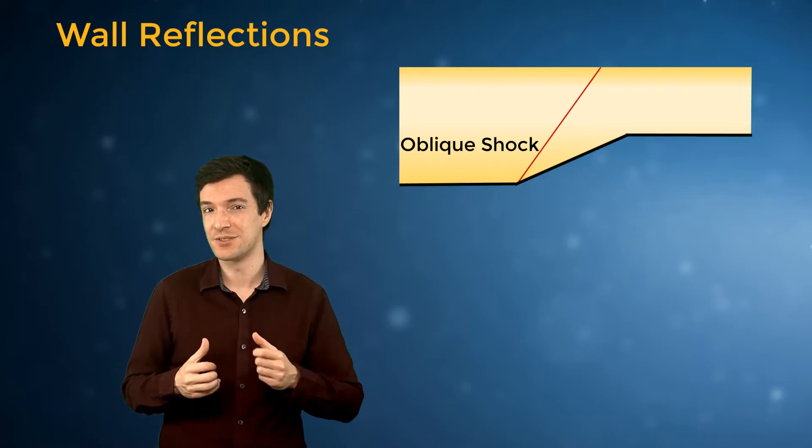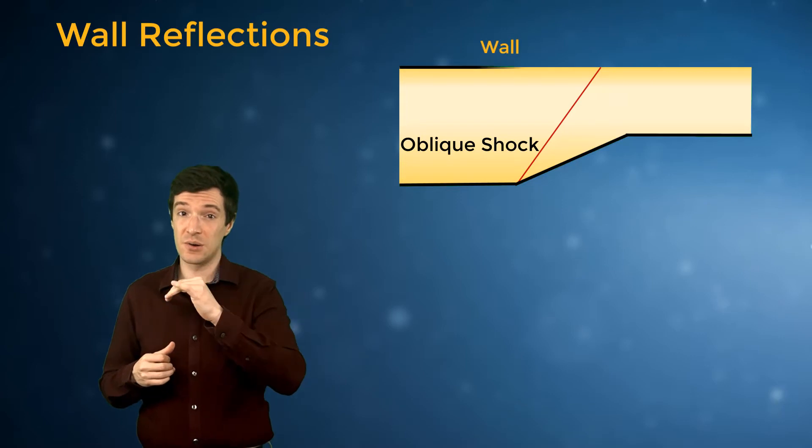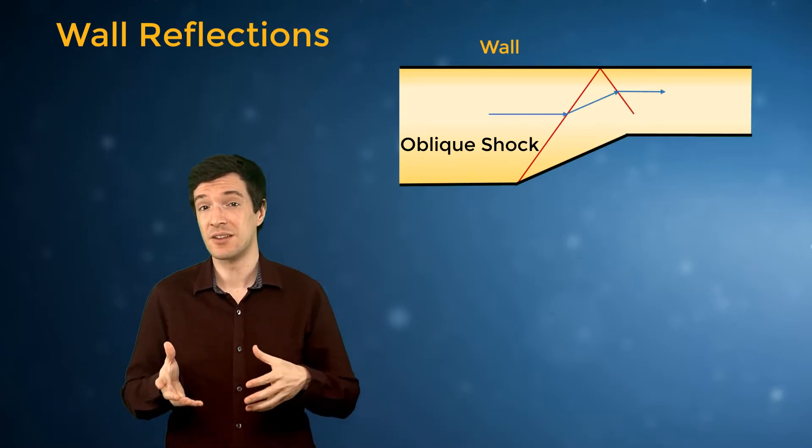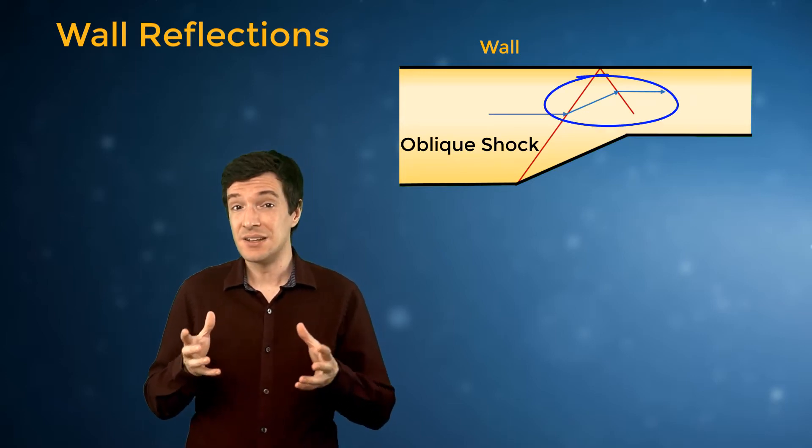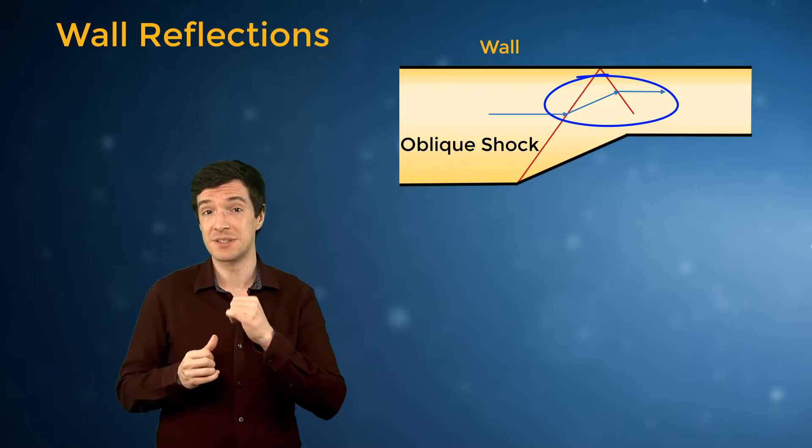Now what if the deflection is inside a channel? The shock will reflect on the opposite wall, like a light ray will reflect on a mirror. This is in order to straighten the flow and make it parallel to the top side again.